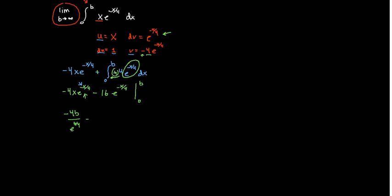Minus what we're going to have here. 16 on top. I'm going to do the same thing. I'm going to move this whole thing to the bottom because of the negative exponent. So that's going to be e to the b over 4. So we plugged in b.